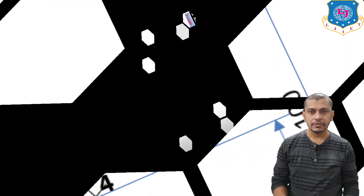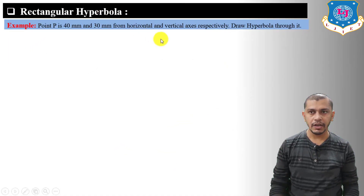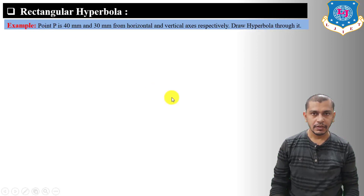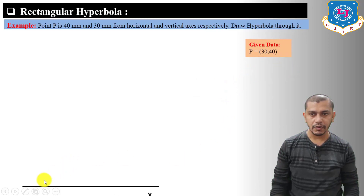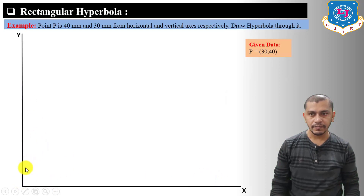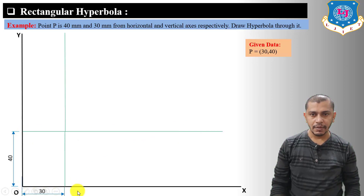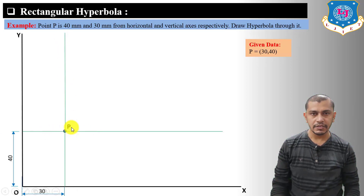Now let's move on to methods to construct the hyperbola. The first method is rectangular hyperbola. Given: point P is 40 mm from horizontal axis (x-axis) and 30 mm from vertical axis (y-axis). Draw a hyperbola passing through point P. Draw x and y axes perpendicular to each other; from origin measure 40 mm on y-axis and draw a horizontal line; measure 30 mm on x-axis and draw a vertical line — their intersection is point P.